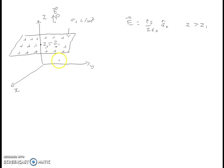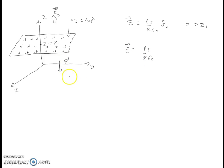For points which are below the z equals z1 plane, the magnitude of the electric field is the same — rho_s by 2 epsilon_0 — but the direction is now downward, that is minus az. So for z less than z1, E equals rho_s by 2 epsilon_0 in the minus az direction.